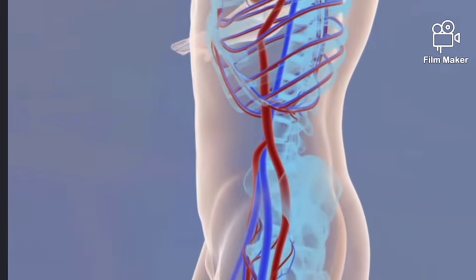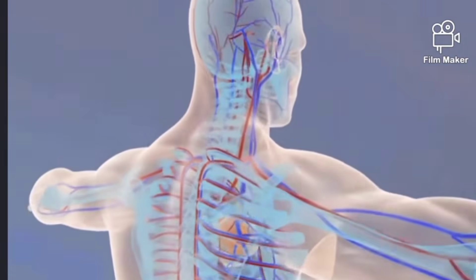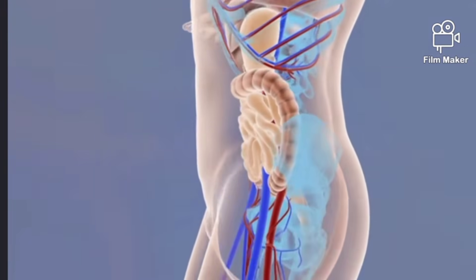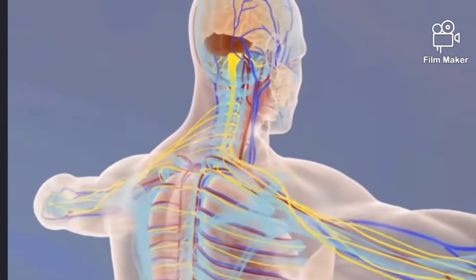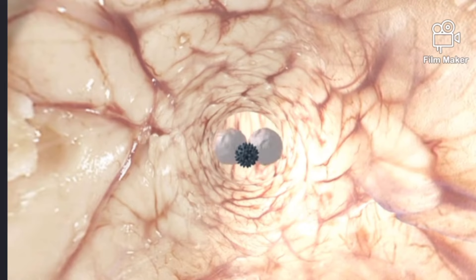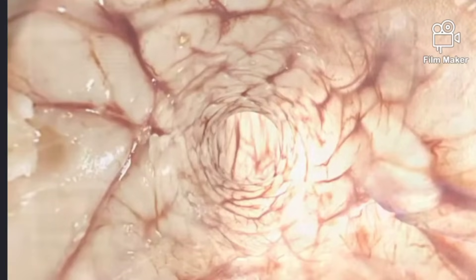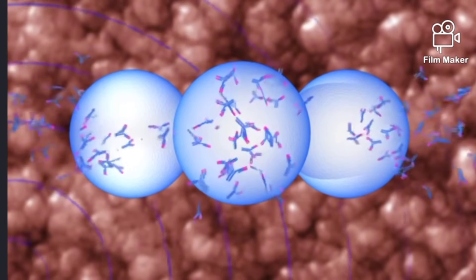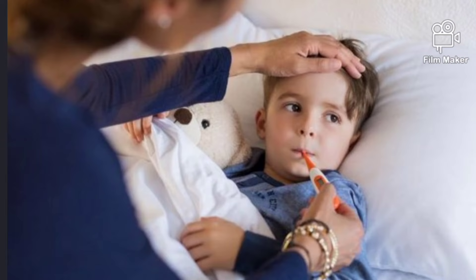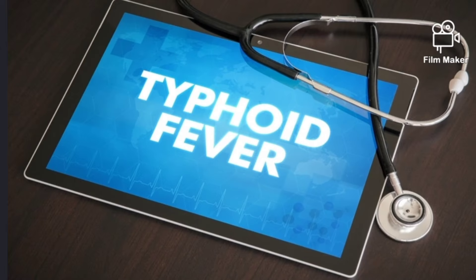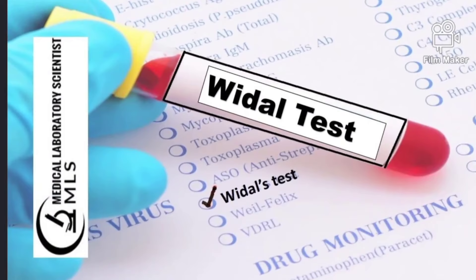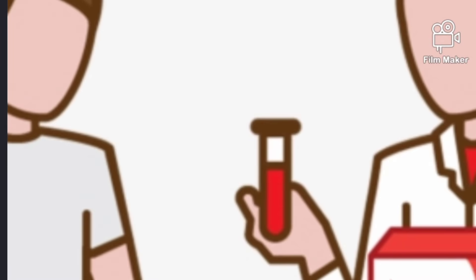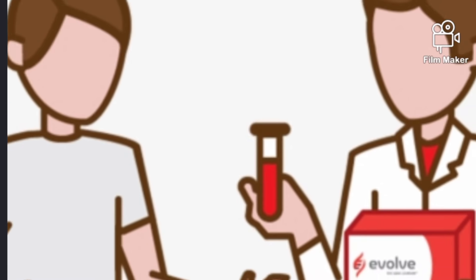Whenever a person is infected with Salmonella typhi, this bacteria enters the human body. Once the bacteria enters the body, the immune system develops antibodies against those antigens. So a person infected with typhoid generally has typhoid antibodies in the blood. Whenever doctors advise a Widal test, the lab technician will collect blood from the patient.